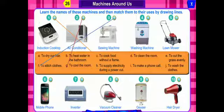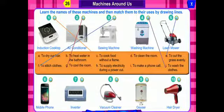Number 4 is washing machine. We use the washing machine to wash clothes. Now tell me, children: what do we use to cut grass evenly? Lawn mower — it is given on number 5. Next is mobile phone, number 6. We all use mobile phone to make phone calls and many such things.